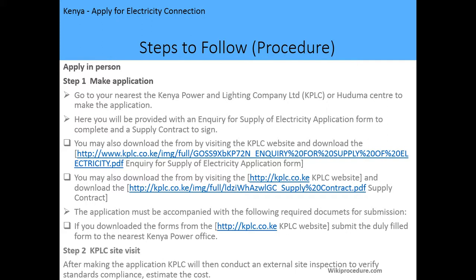The procedure is as follows. The application can be made online or in person. For in-person applications, the first step is to visit your nearest KPLC — Kenya Power and Lighting Company — or Huduma Center to make the application. At the Huduma Center there is a KPLC desk you can visit. Here you will be provided with an inquiry form for supply of electricity and a supply contract form to complete and sign. These forms can also be downloaded online through the links included on our Wiki Procedure website.